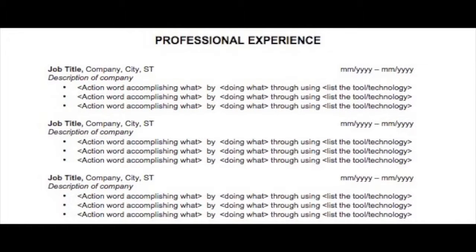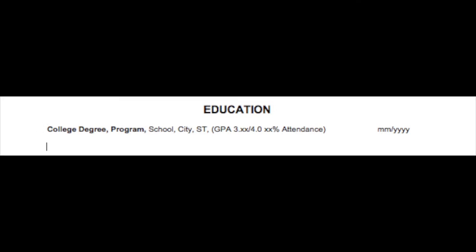The second letter E in the CAREER model stands for education, and should include any diplomas or degrees, and may also include certificates and appropriate continuing education or coursework. It may also refer to on-the-job training if formal education is lacking.